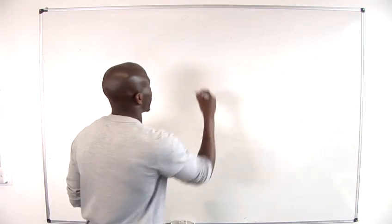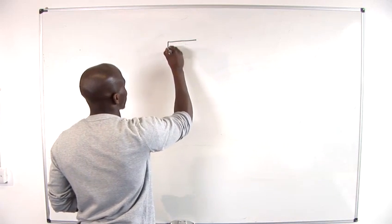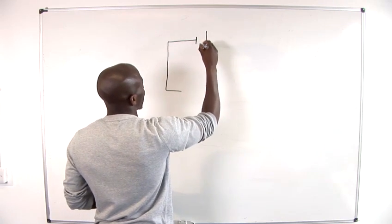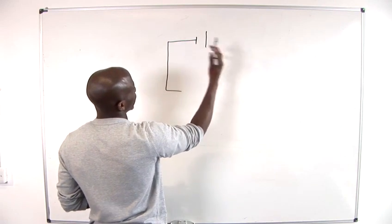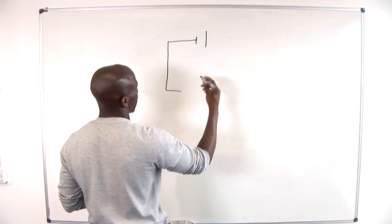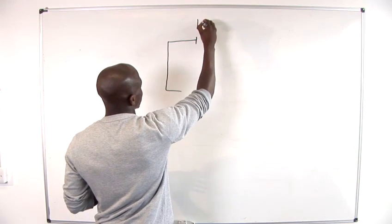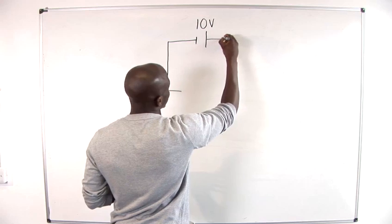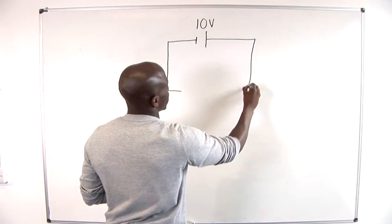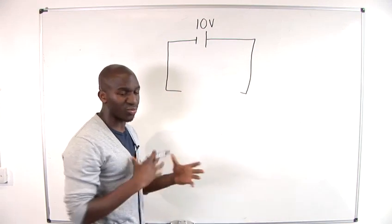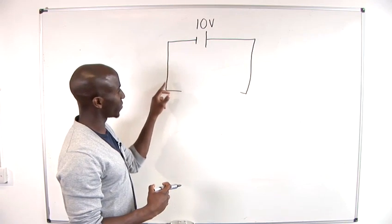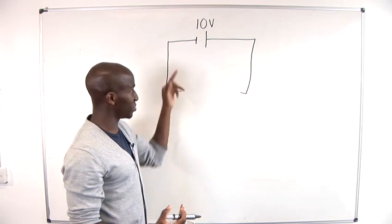Within a particular circuit you might find you have a power supply, and that's normally denoted by this, like a battery or something like that, and we'll give this a rating of 10 volts. Now voltage is like the electrical force that provides the electrons with the electrical energy to move around.